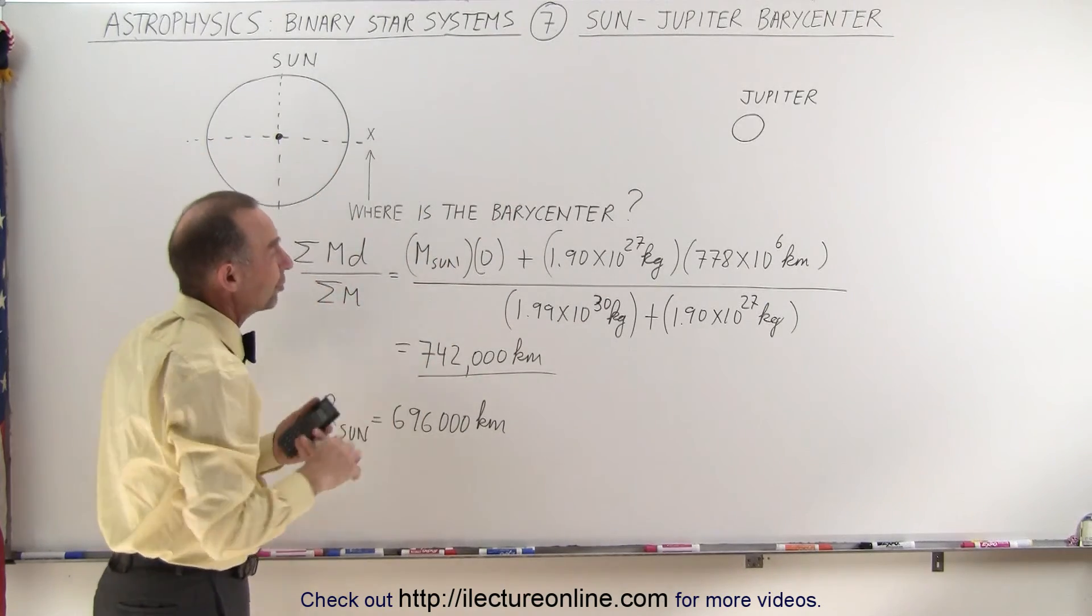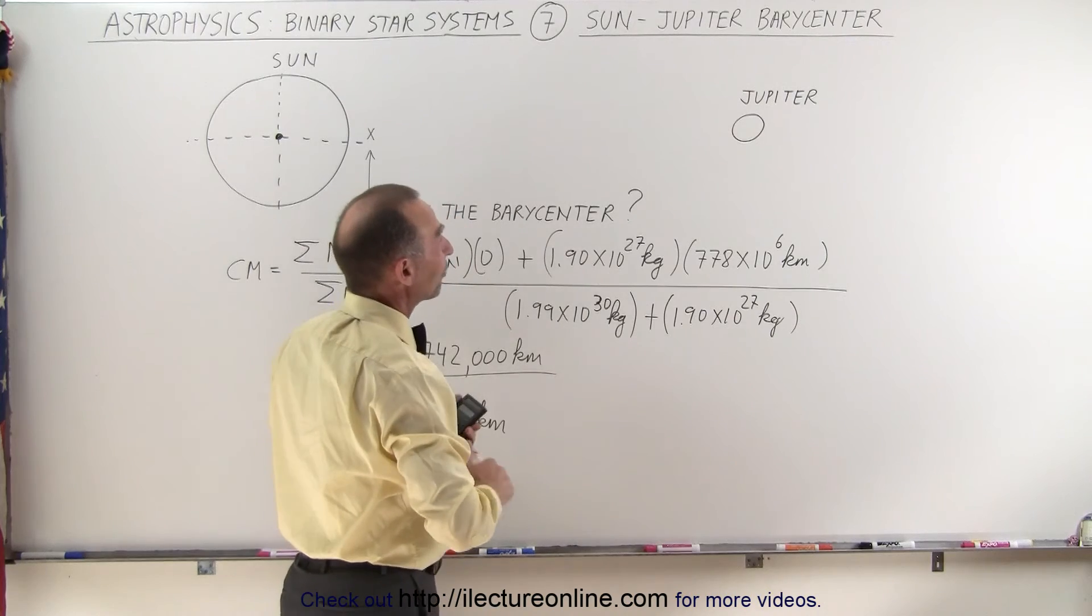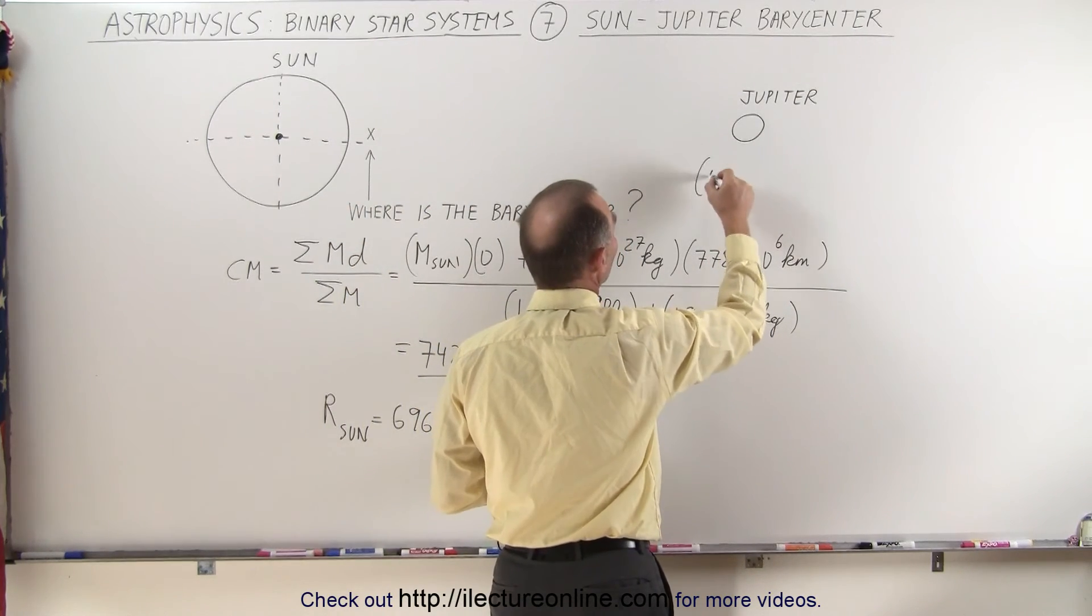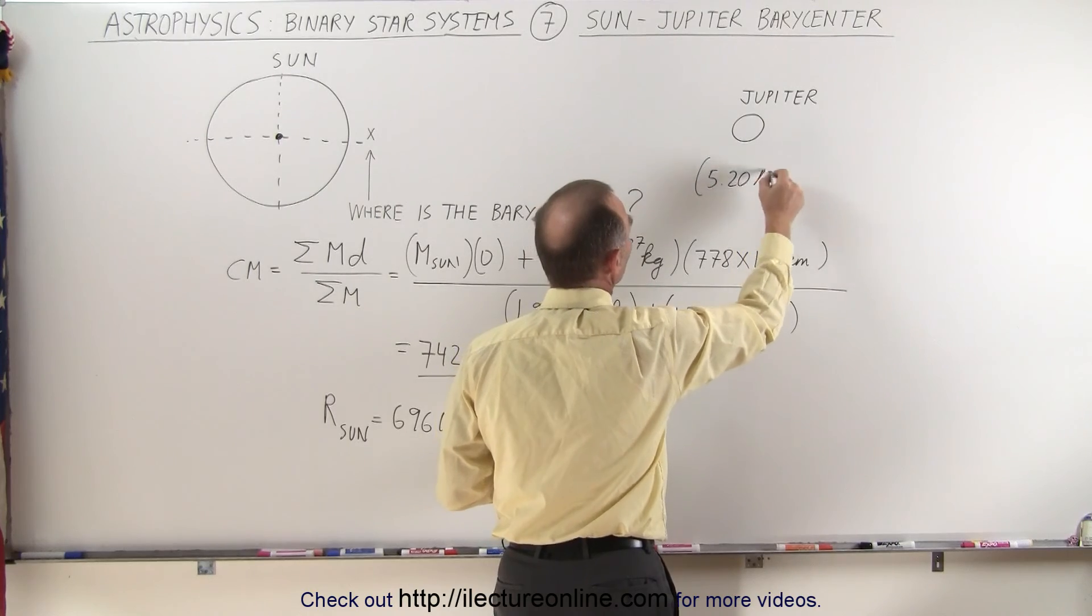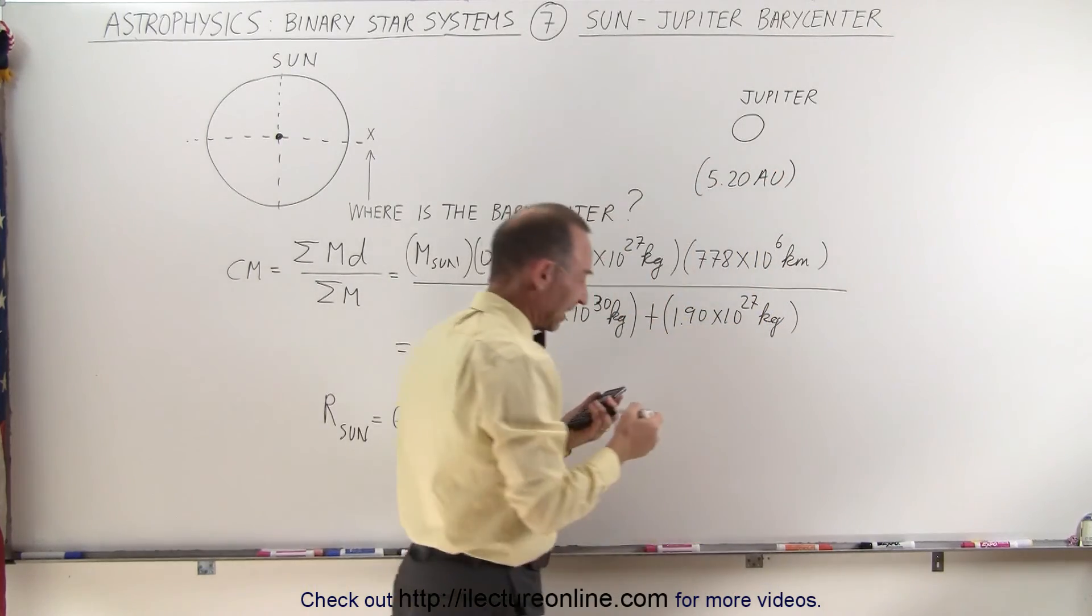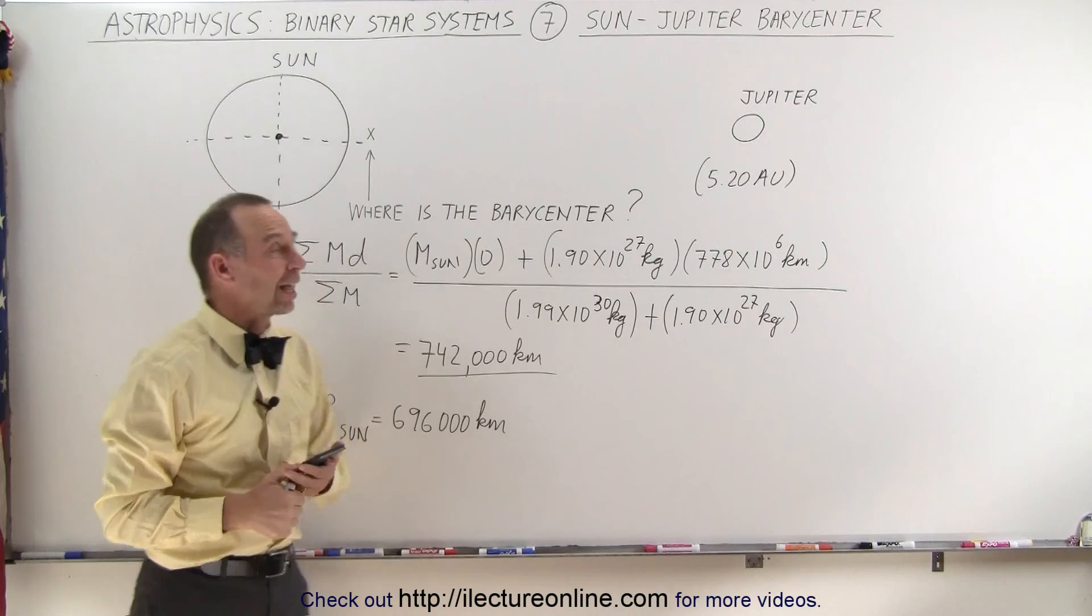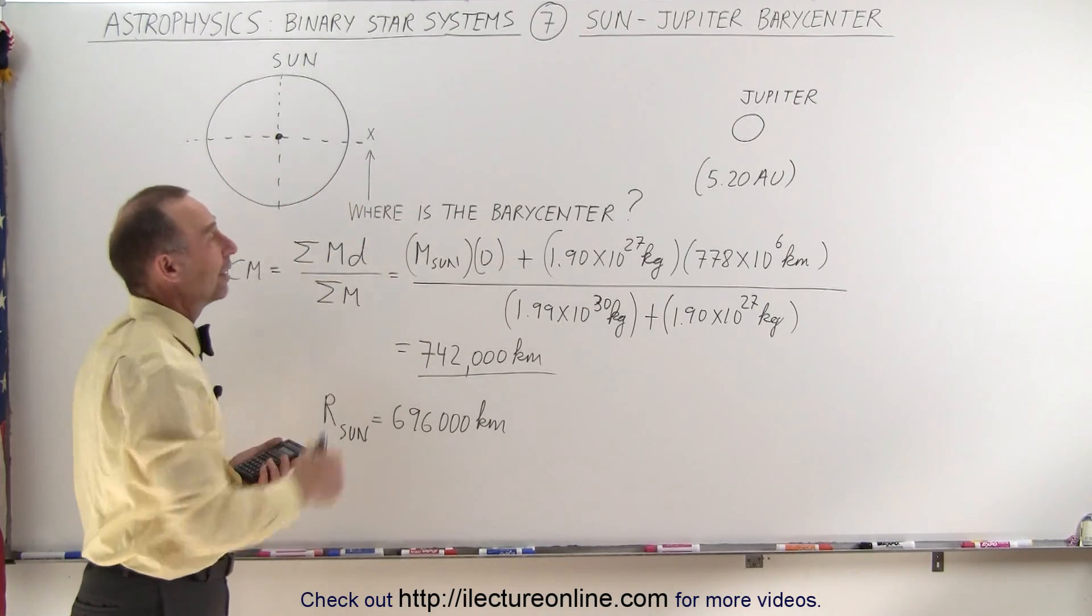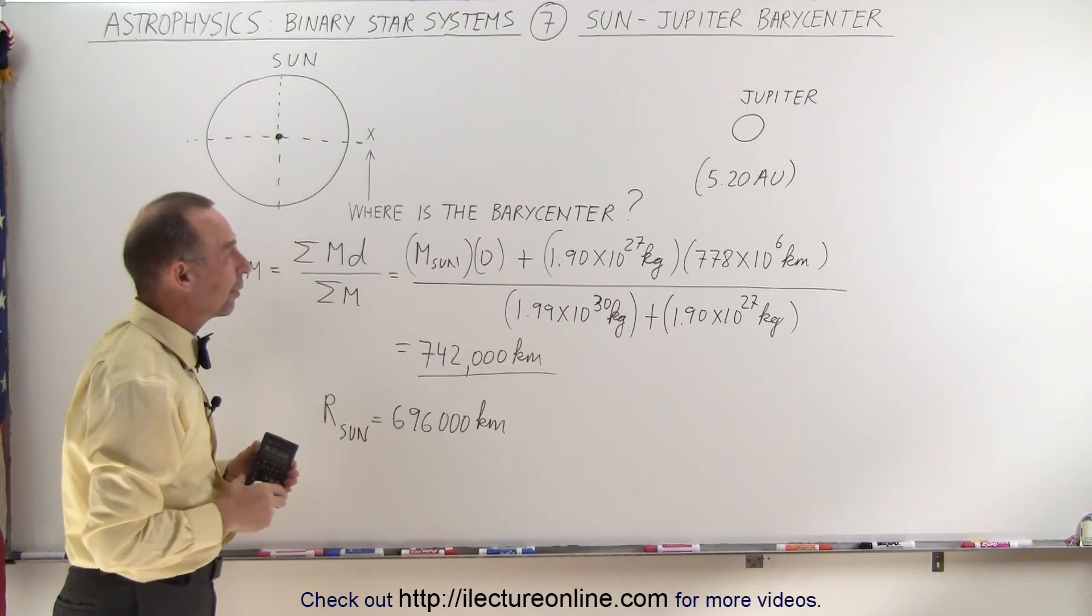Although, since Jupiter is quite far away, 778 million kilometers, which is about 5.2 astronomical units, we don't discover a lot of planets this way the size of Jupiter that are that far away from the star that they're orbiting around.